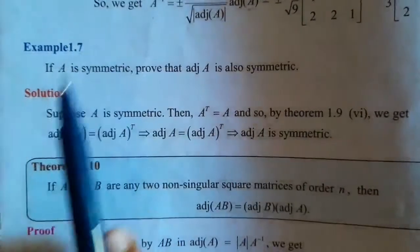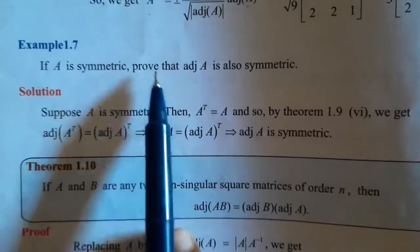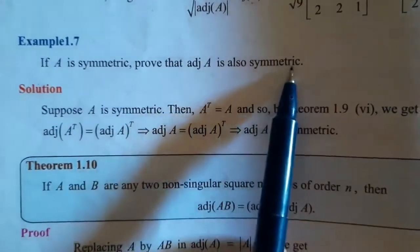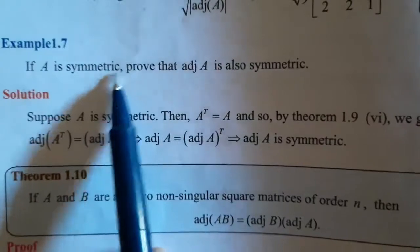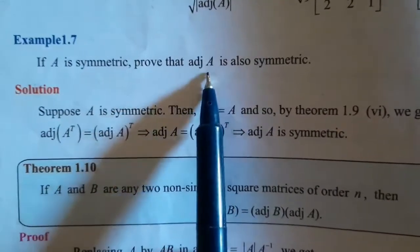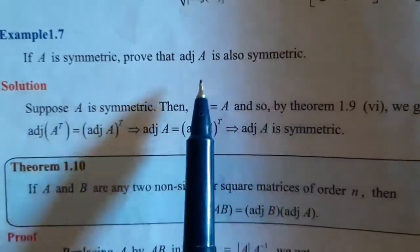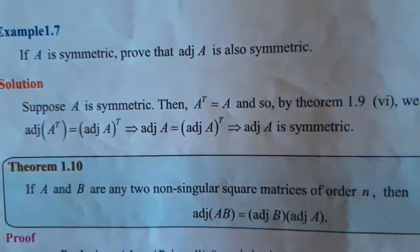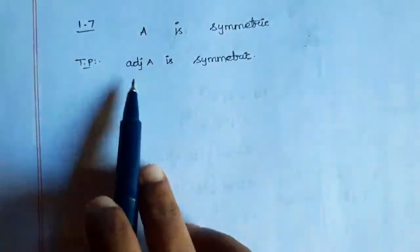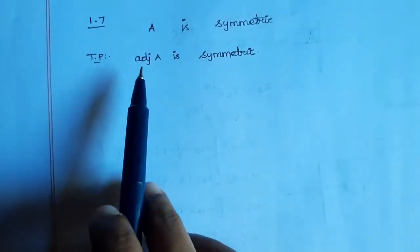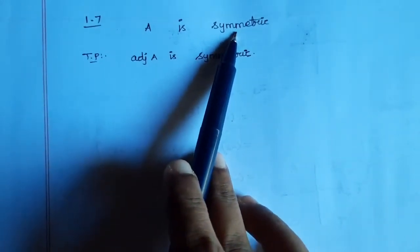Example 1.7. If A is symmetric, prove that adjoint A is also symmetric. A matrix is symmetric — we have to prove adjoint A is also symmetric. See, this example: given A is symmetric.